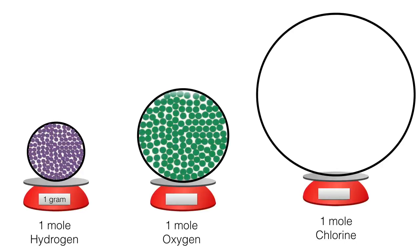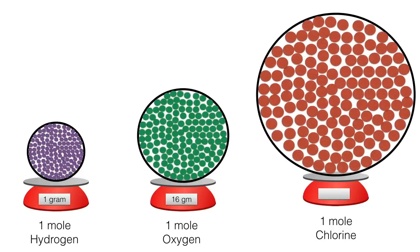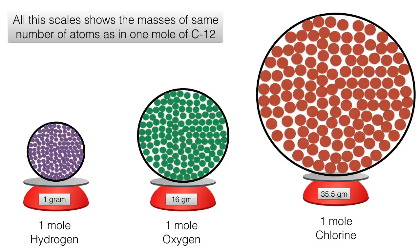Similarly, 1 mole of oxygen has exactly 16 gram weight. That is the atomic mass of oxygen. 1 mole of chlorine has an atomic weight of 35.5 grams, and all these scales show the masses of the same number of atoms as in 1 mole of carbon-12, that is, Avogadro's number.